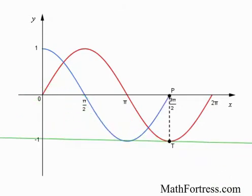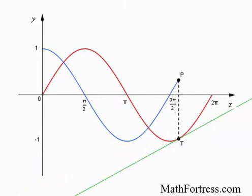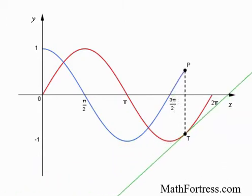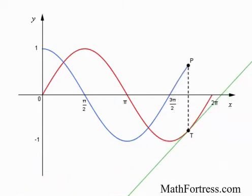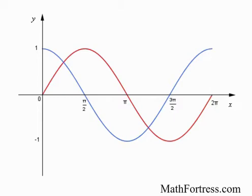At that point, the slope of the tangent line becomes positive once more, so the values of the output are positive. There we go — there's one full cycle. Looking at the blue graph, it looks awfully familiar. Indeed, this is the cosine function.